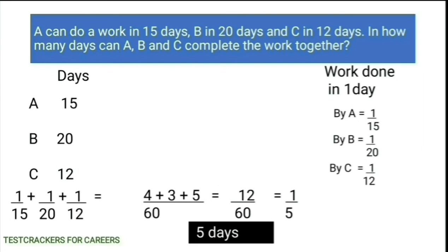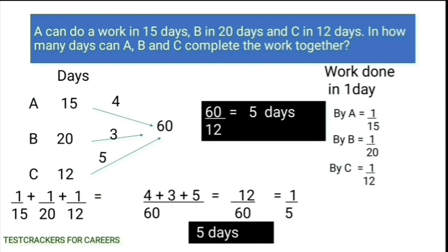Let's solve by finding the LCM of 15, 20 and 12, which is 60. The total units of work which has to be done by A, B and C is 60. A does 4 units of work in a day, B 3 units and C 5 units. Totally they do 12 units of work in a day. They can complete 60 units of work in 5 days — that is, 60 divided by 12 gives 5. So A, B and C take 5 days to complete the work.